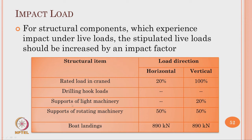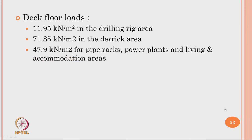For supporting rotating machinery, the total additional load is divided equally between horizontal and vertical components. Boat landing impact values are given as state values in the code. Typical deck floor loads where the drilling rig is located vary from 11.95 kN/m²; the derrick area has a live load of 71.85 kN/m²; and pipe racks, power plants, living and accommodation areas have a live load of 47.9 kN/m².